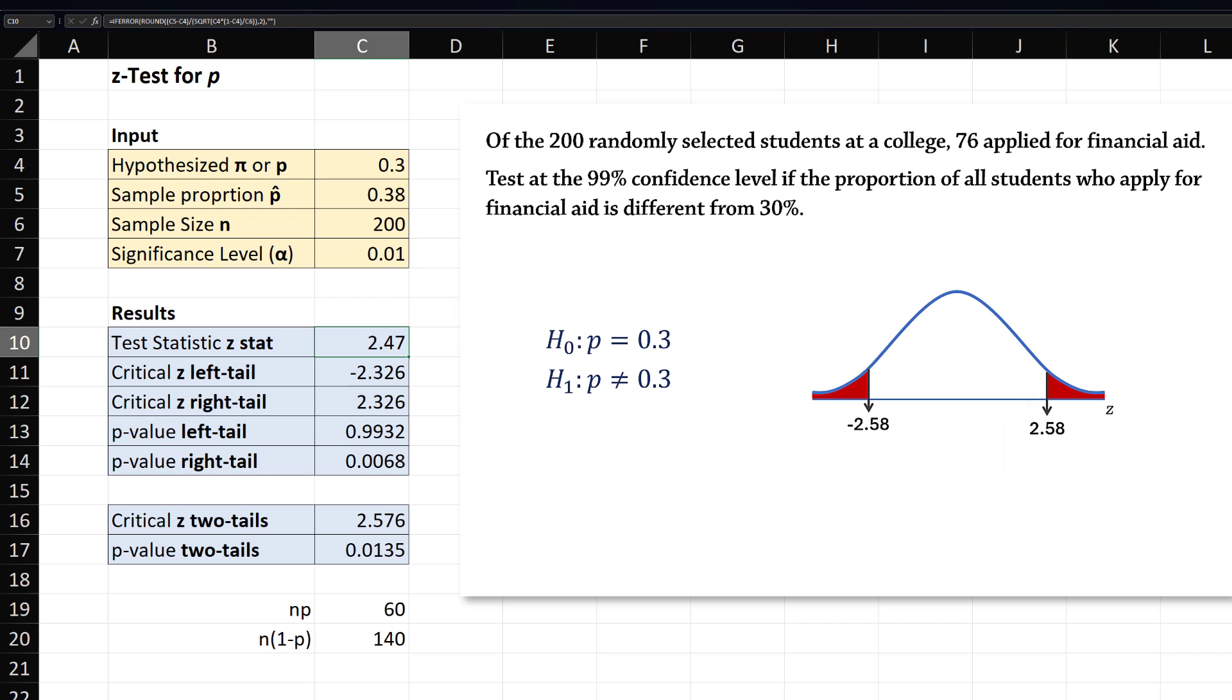Next, suppose we want to test if the proportion is higher than 30%. This is now a right-tailed test, and using the critical value approach, we will reject the null hypothesis if the z-stat is greater than positive 2.33. Since the z-stat of 2.47 is greater than the critical value, we reject the null hypothesis in favor of the alternative.